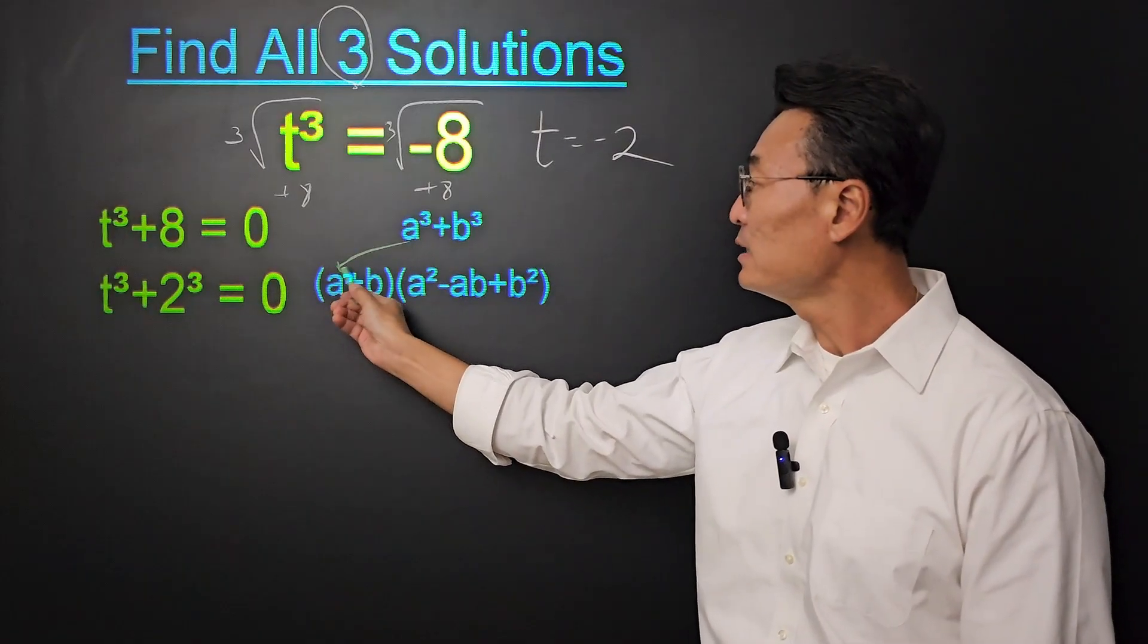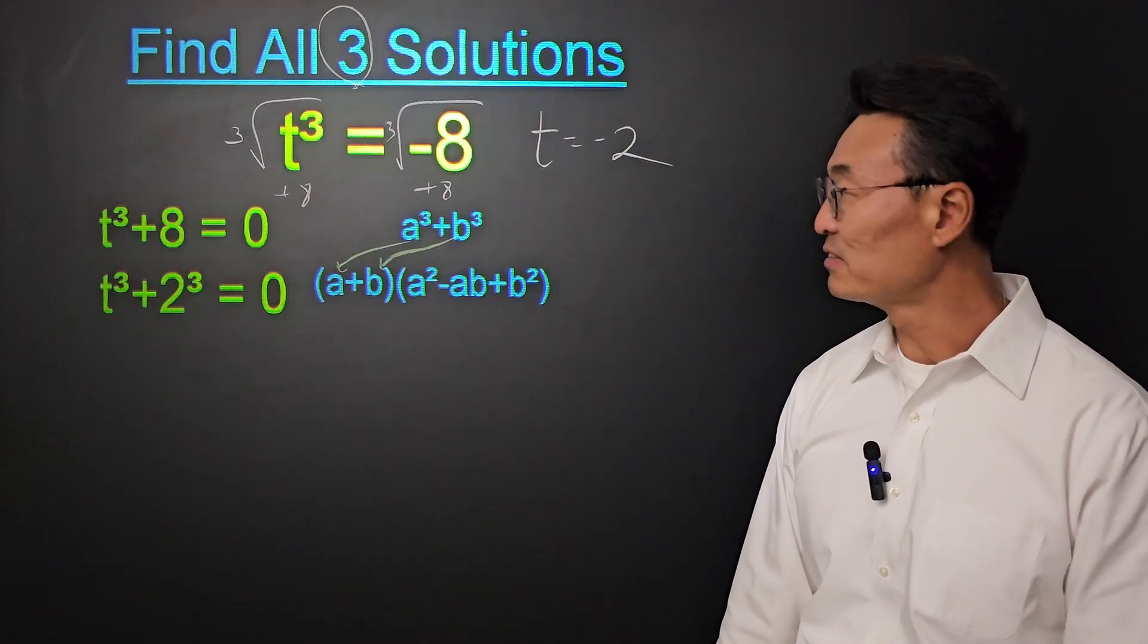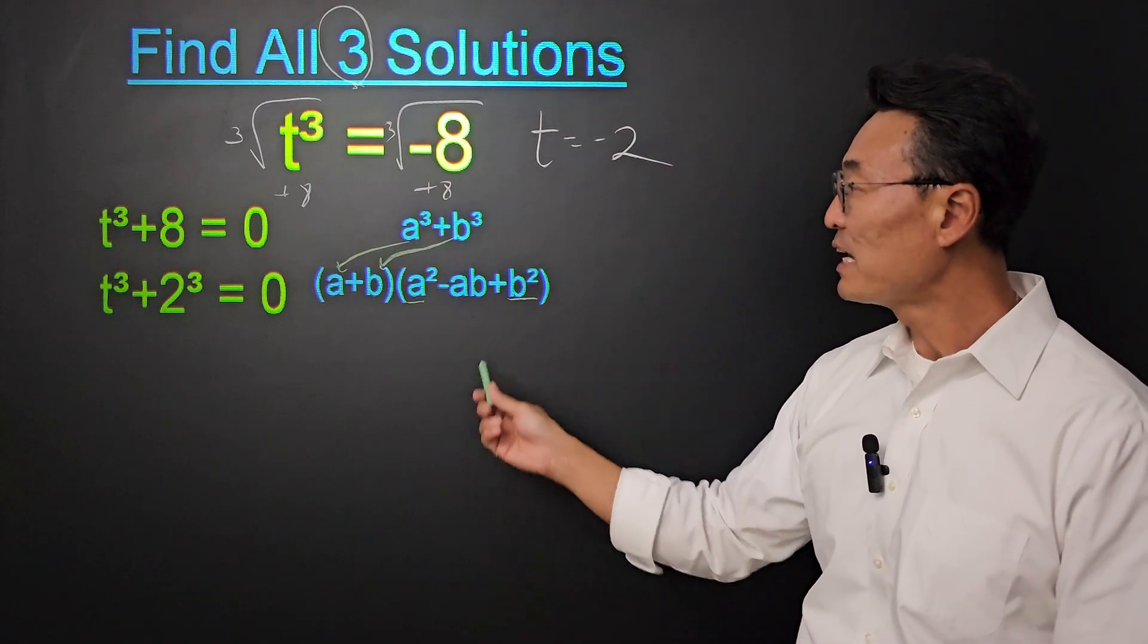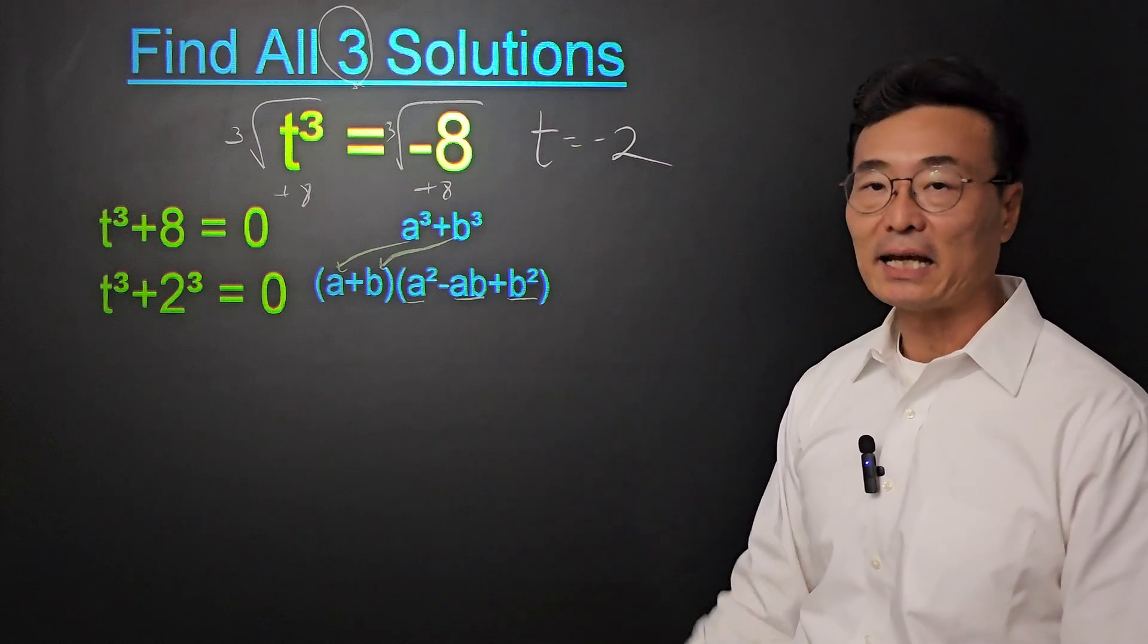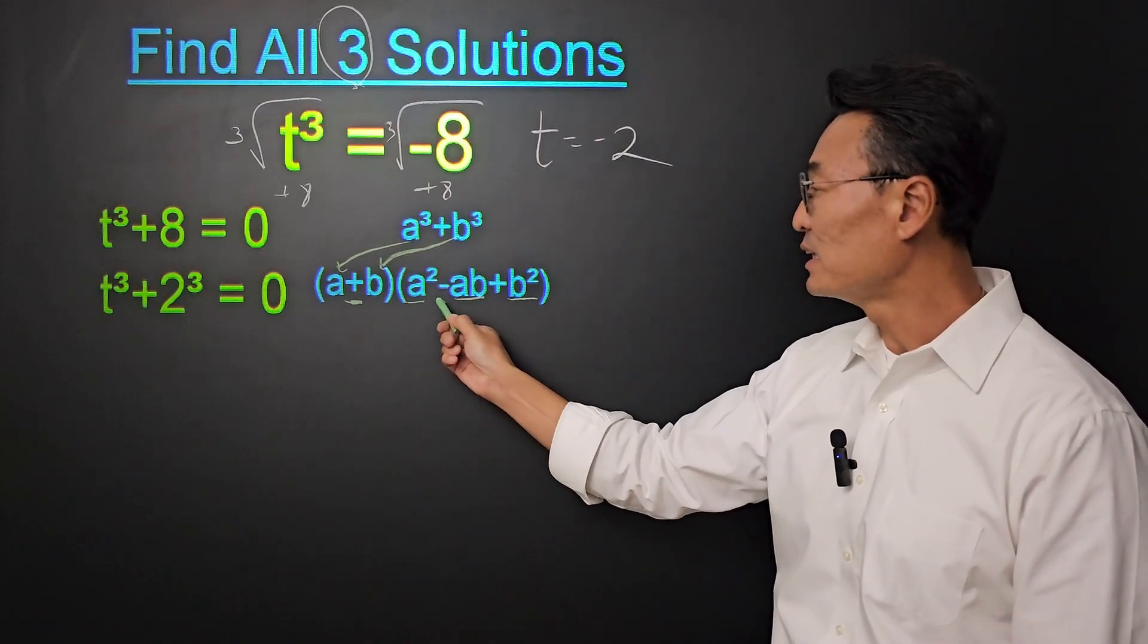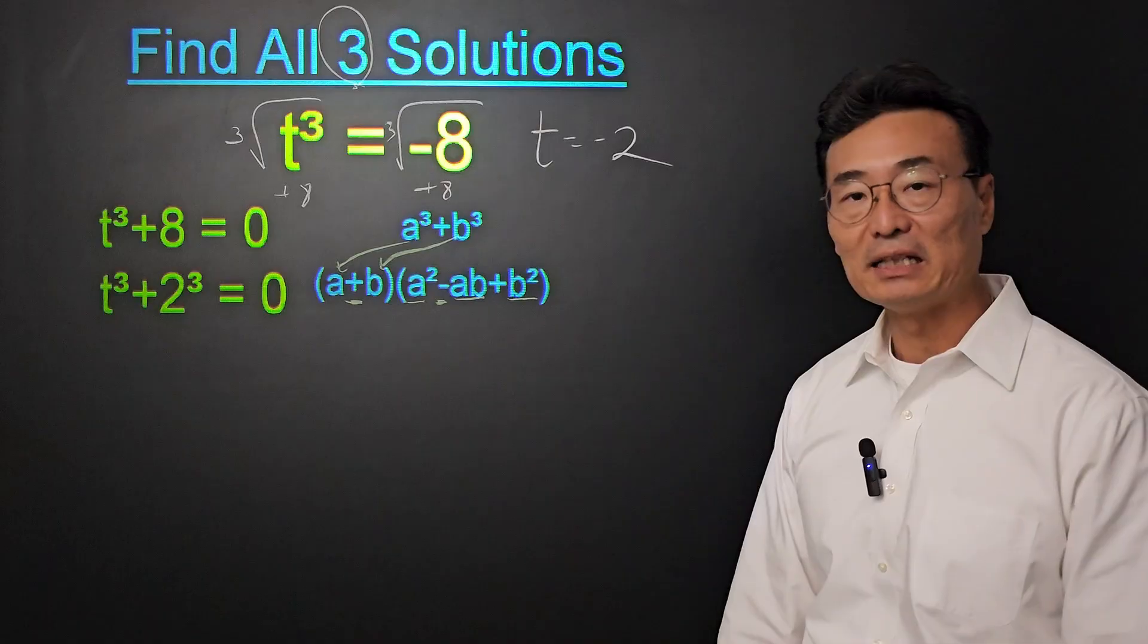We take the a and the b into the front set of parentheses. And then we have a squared, b squared, and then we multiply the a and b. But notice the sign in the front will be plus, whereas the sign in the second set of parentheses will be negative.